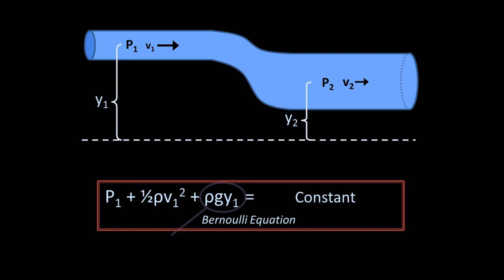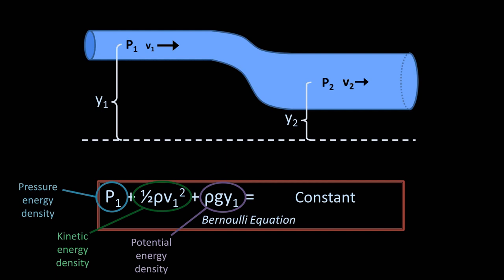This term is the potential energy density of the fluid. This term is the kinetic energy density of the fluid. And this term is something called pressure energy density. Don't worry if the term pressure energy is totally unfamiliar to you. Just know that as a liquid travels through a conduit, these various energies trade off at different points, but their sum is always the same.